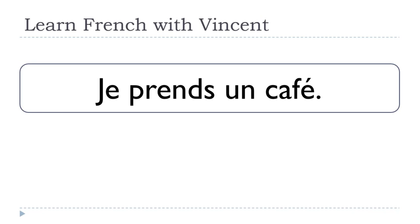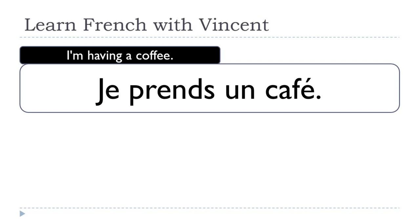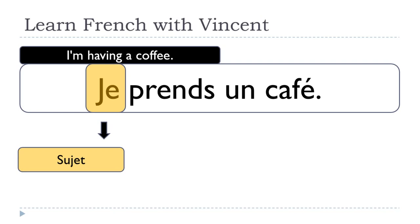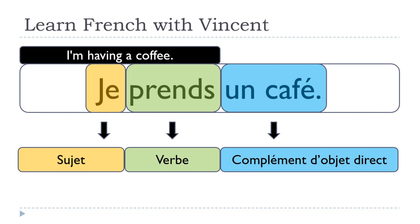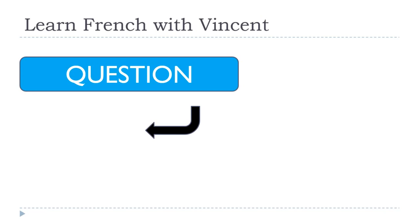Another sentence: JE PRENDS UN CAFÉ — I'm having A coffee. The difference from JE PRENDS LE CAFÉ is that UN is the indefinite article. JE is still the subject, PRENDS is still the verb, and UN CAFÉ is still the COMPLÉMENT D'OBJET DIRECT.